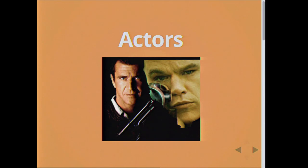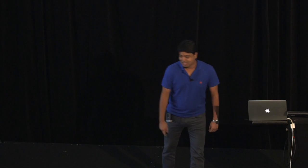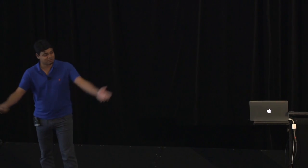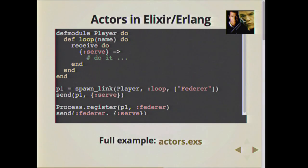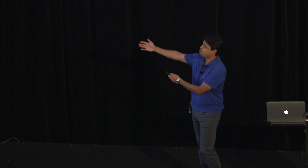Next up, actors. We'll look at Elixir and Erlang to see the actor philosophy. Actors are essentially processes or threads that have their own mailbox — a queue of things to do. You pass messages to them and they run them sequentially. Erlang is famous for this because Erlang processes are very lightweight, and you can create thousands and thousands of them.